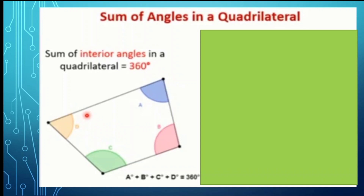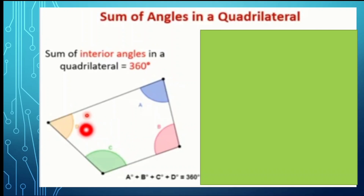These are the interior angles of quadrilateral A, B, C, D. So right here, if we're going to combine the measure of each angle, we have angle A plus the measure of angle B plus the measure of angle C plus the measure of angle D — that will give us a measure equivalent of 360 degrees. Again, this is for the interior angles of a quadrilateral.